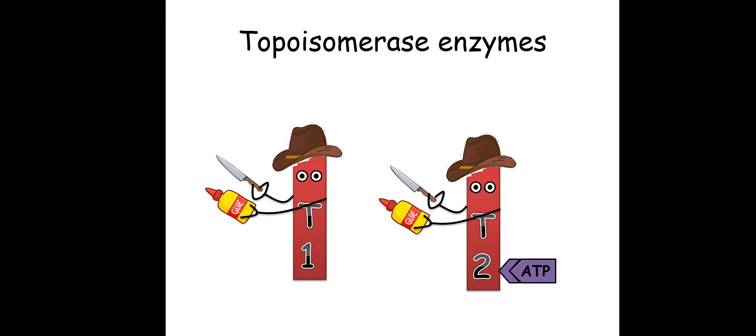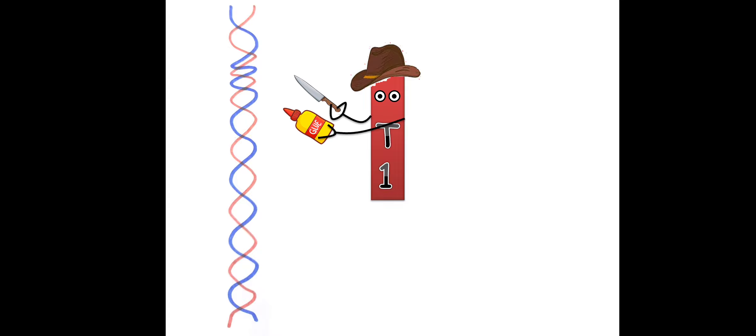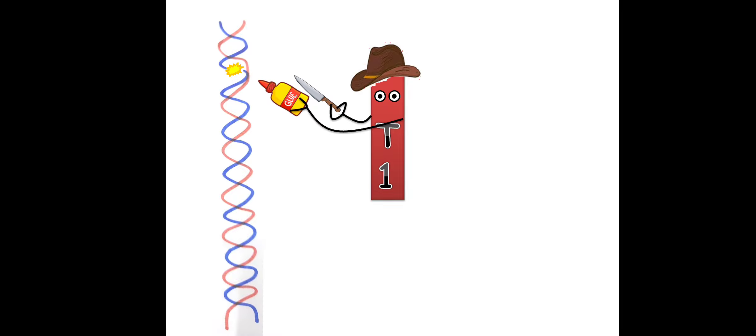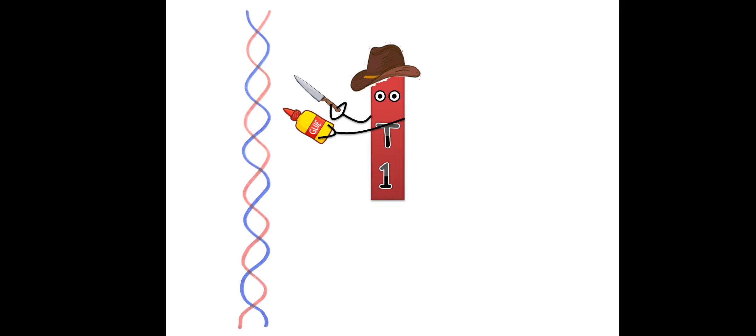Let us check out the work of type 1 topoisomerase. Suppose there is too much coiling in the DNA strand — a negative supercoiling. Type 1 topoisomerase comes in and with its nuclease cuts one of the double strands, breaking the phosphodiester bond in the supertwist of one strand. It lets the free ends of the cut strand untwist around the intact strand, and once they have untwisted enough, it uses the ligase to seal the point. In this manner, the negative supercoil is removed and a positive supercoil is introduced. Type 1 means it breaks and reseals one strand.